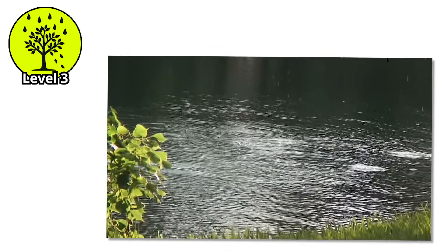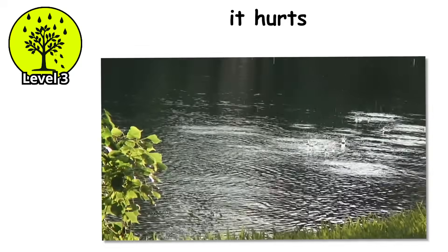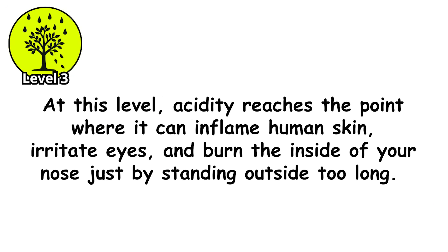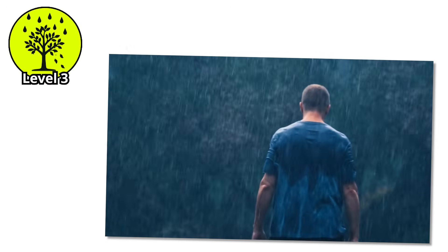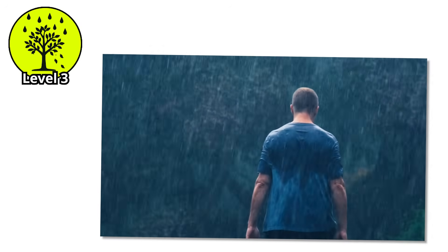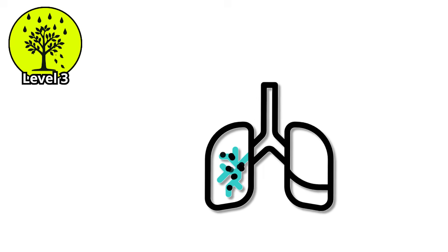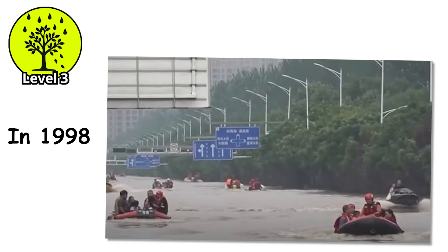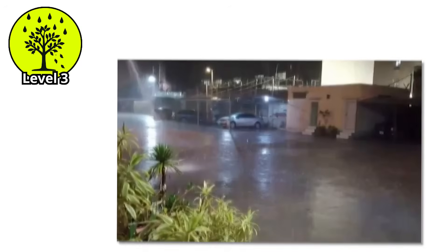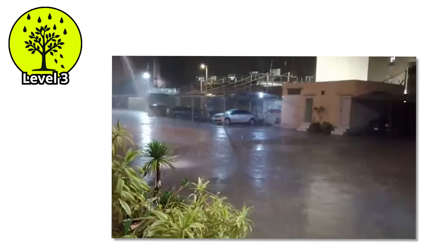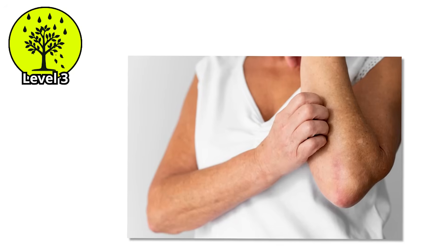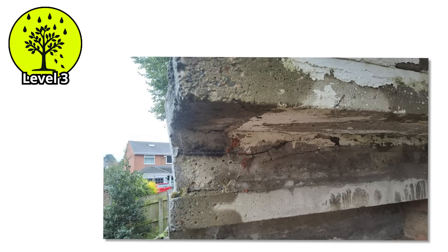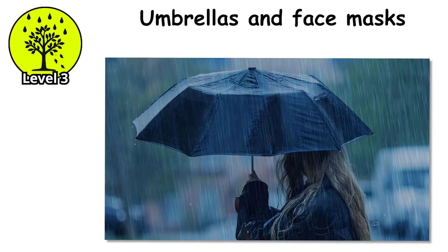Level 3. pH 3.0 to 3.5. The rain still looks clear, still falls soft, but now it hurts. At this level, acidity reaches the point where it can inflame human skin, irritate eyes, and burn the inside of your nose just by standing outside too long. It is the atmospheric equivalent of lemon juice in a paper cut, except now your lungs are the paper. In 1998, rainfall in Beijing dropped to a pH of 3.0 — as acidic as soda — soaking into skin, corroding fabric, and coating every surface it touched. Umbrellas and face masks became part of daily life.